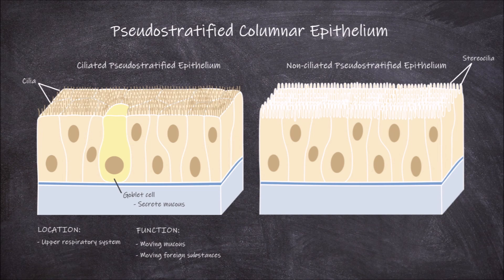This increased surface area is important as the main function of this type of epithelial cell is in absorption. Non-ciliated pseudostratified epithelium is found lining the vas deferens and epididymis of the male reproductive system. Here it functions in the absorption of excess fluid, causing the sperm to become more concentrated. Both the ciliated and non-ciliated forms function as a layer of protection against substances found on the lumen of the different organs they are found lining.